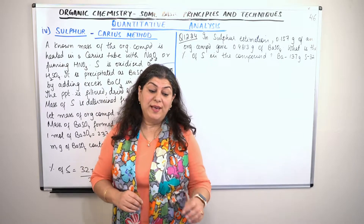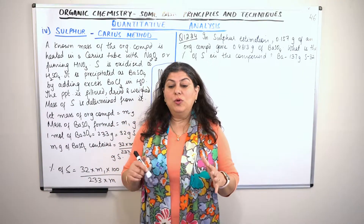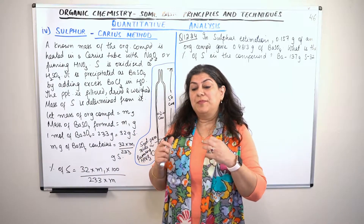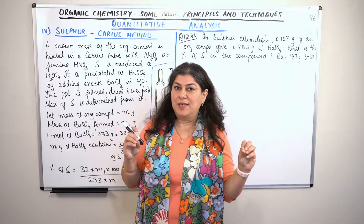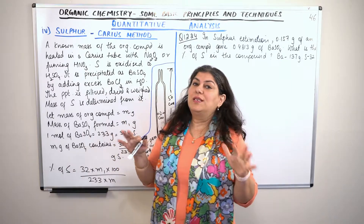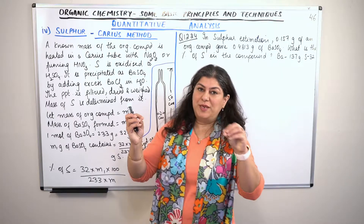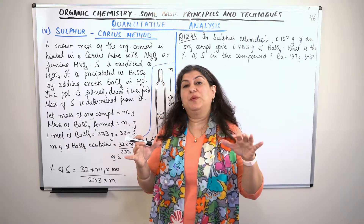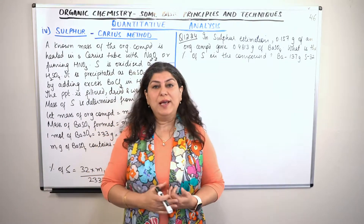We are doing quantitative analysis of organic compounds. After the qualitative analysis, we have started quantitative analysis — which tells us which element is present and the mass percentage of each element. After that, we can estimate the empirical formula.